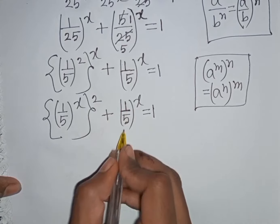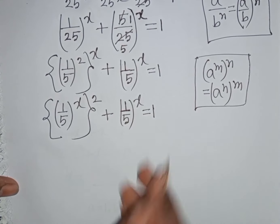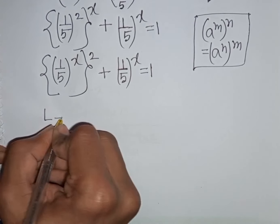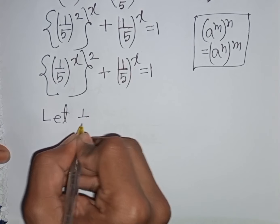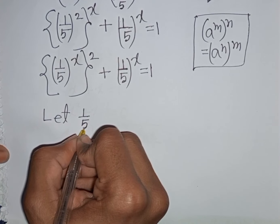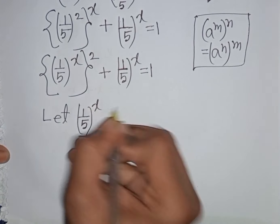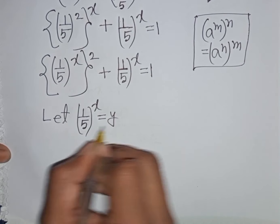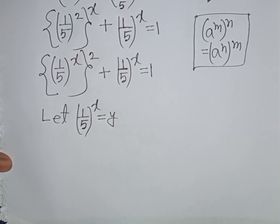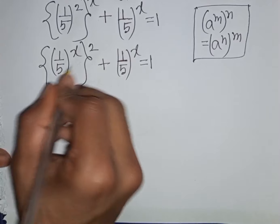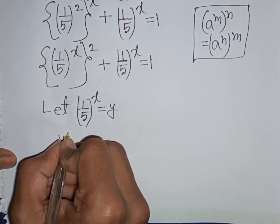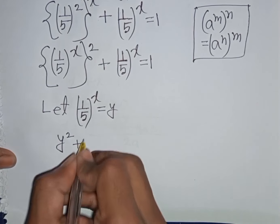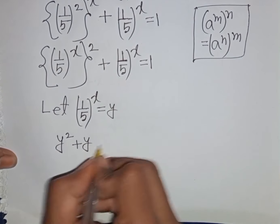We see that (1/5)^x and (1/5)^x — both terms are the same. So let (1/5)^x be substituted by y.